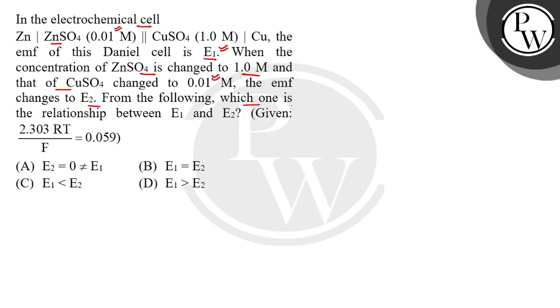From the following, which one is the relationship between E1 and E2? Given 2.303 RT upon nF is 0.059. Okay, so first of all, let's start with the cell. Zn, ZnSO4 here it is 0.01M. Here it is CuSO4 and here it is 1.0M. And here it is Cu.